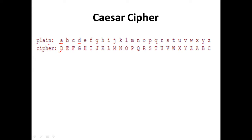If your plain text contains a character like F, then you encrypt it by going three characters further down: one, two, three — giving us I. So we encrypt F as I. It's just a simple substitution with the cipher text, and that's how you encrypt a plain text using Caesar cipher.